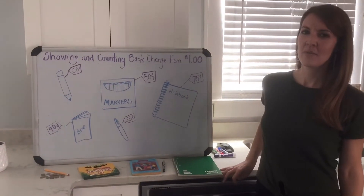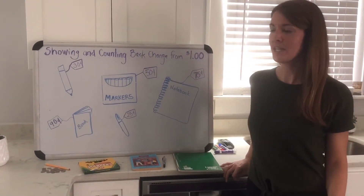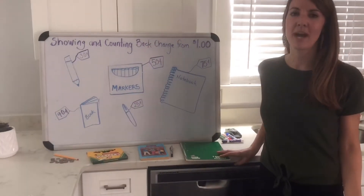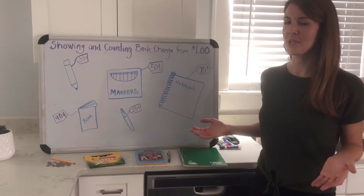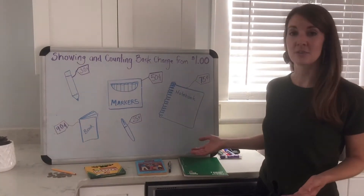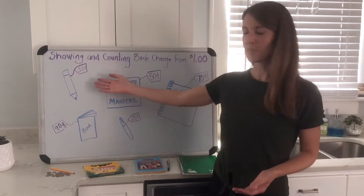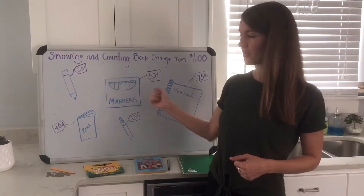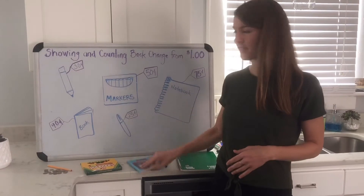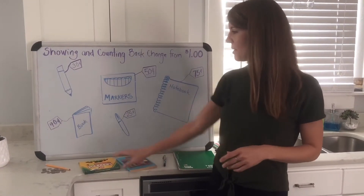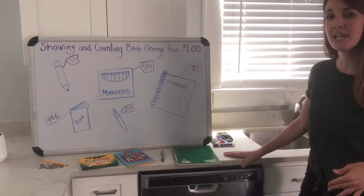Hi second grade, today we are going to do a lesson once again using money. We're going to be showing and counting back change from a dollar. I'm going to pretend that I am the owner of a store — I'm the clerk. I have these items for sale in my store with price tags: a pencil that costs 30 cents, a book that costs 90 cents, markers that cost 50 cents, and so on.